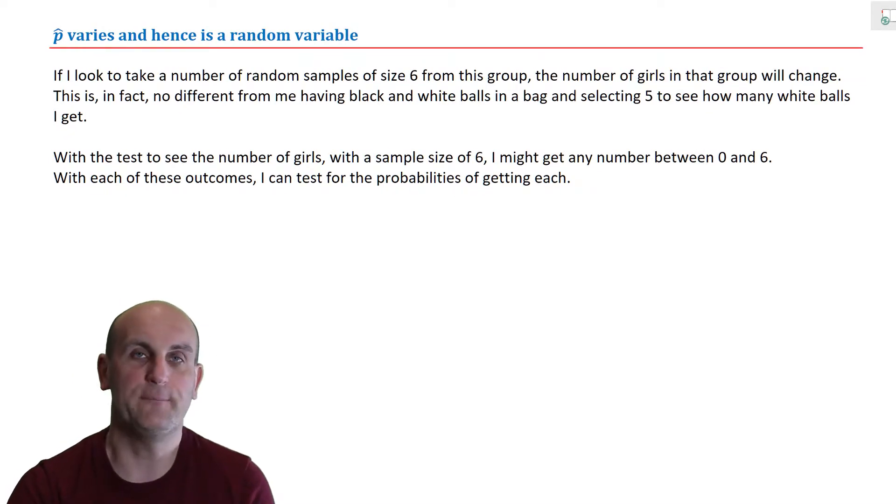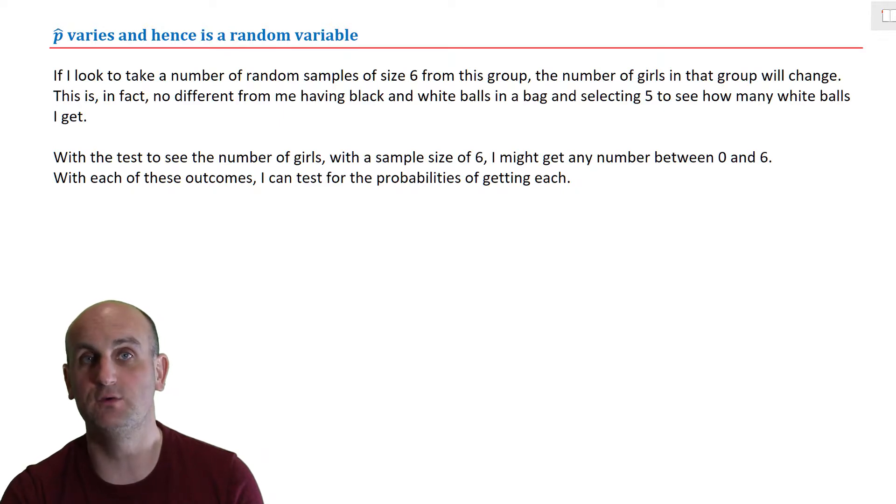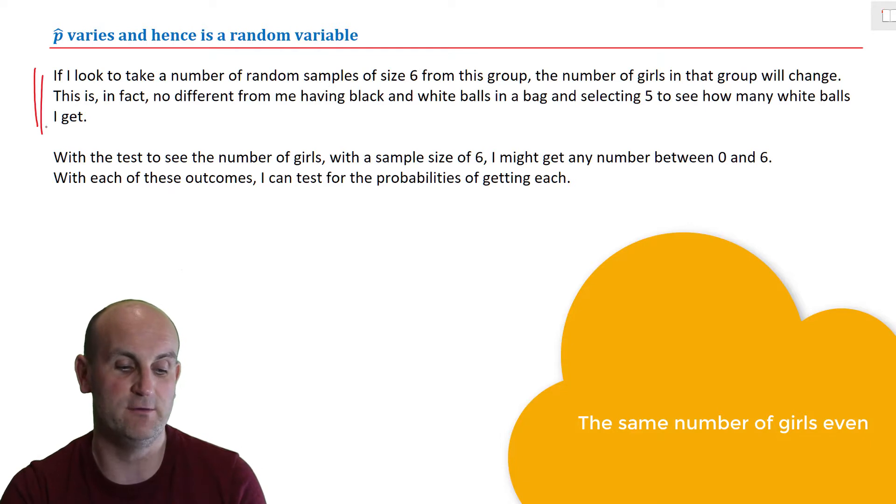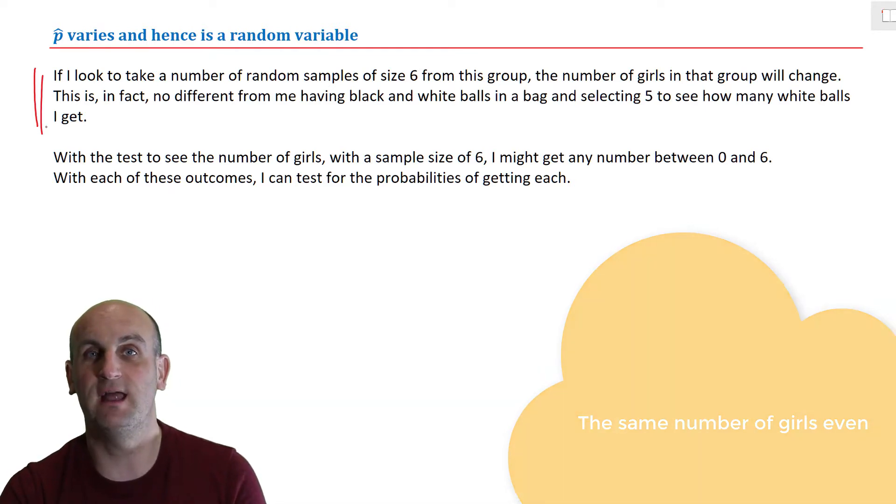But my sample proportion will, and that's very much what this last little section here says. p hat will absolutely vary. If you go back to the idea of my 17 students, I chose 6. If I was to run my random generator again and choose a different 6 students, then will they end up being exactly the same? No, they won't. So if I end up with a different 6 students, will I end up with the same 4 students with blue eyes or the same 4 students who are girls? No. And so, it is really, really important for the rest of this lesson or the rest of these videos to know that p hat varies and as such is a random variable.